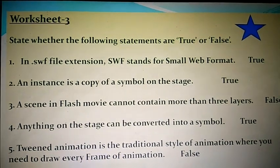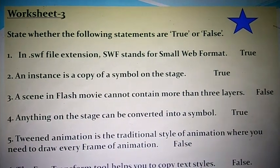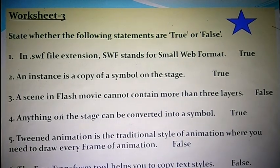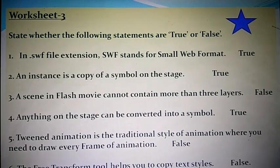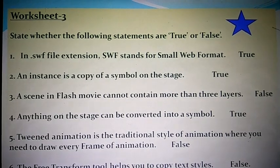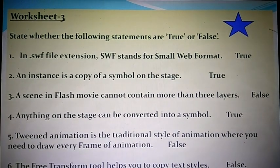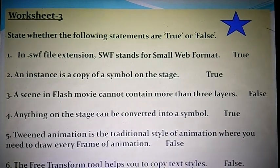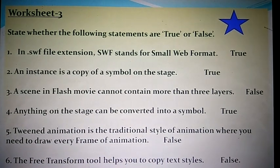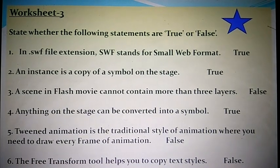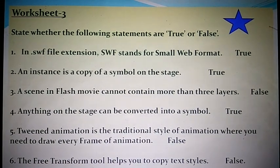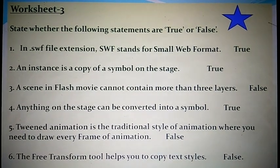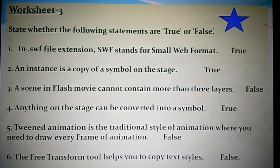Worksheet three — true or false. First: .swf stands for small web format — true. Second: an instance is a copy of a symbol on the stage — true. Third: a scene in a flash movie cannot contain more than three layers — false. Fourth: anything on the stage can be converted into a symbol — true. Fifth: tween animation is the traditional style of animation where you need to draw every frame — false. Sixth: the free transform tool helps you to copy text styles — false.